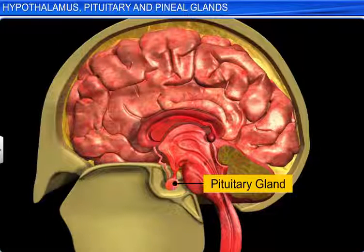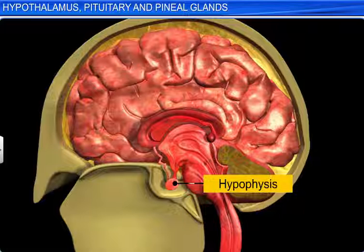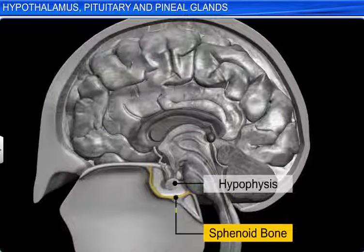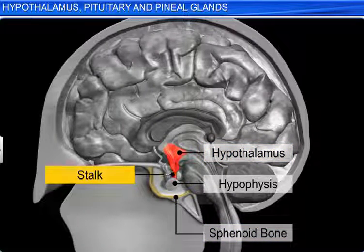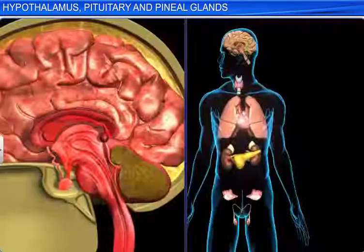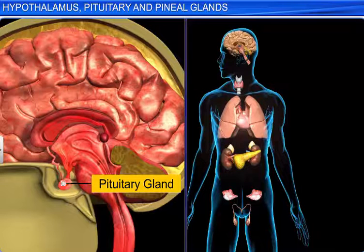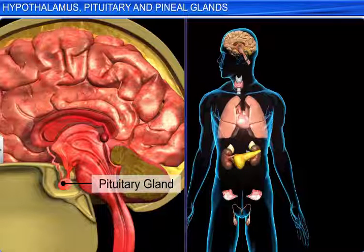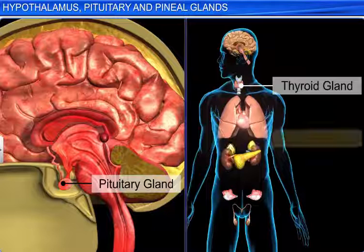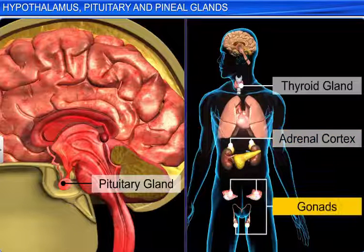The pituitary gland, also known as the hypophysis, lies in the sella turcica of the sphenoid bone. It is attached to the hypothalamus by a stalk. Pituitary is the smallest endocrine gland, yet it is called the master of endocrine glands, because it produces hormones that control the thyroid gland, the adrenal cortex, and the gonads.